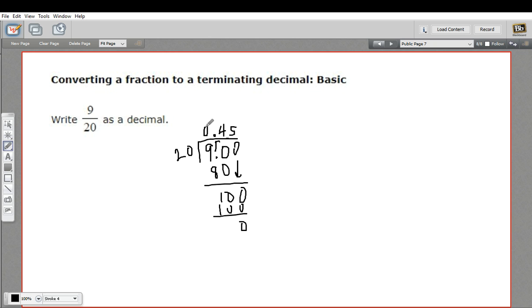So we get 0.45. So 9 twentieths is 0.45. So that is how to convert a fraction to a decimal.